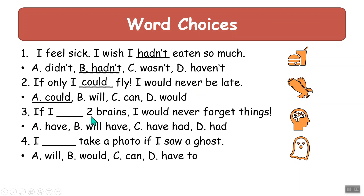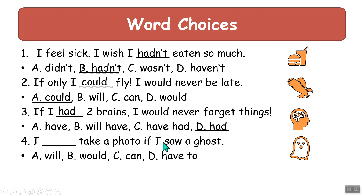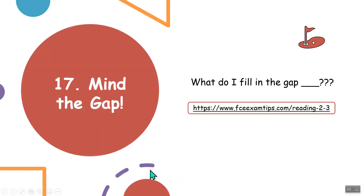'If I had two brains, I would never forget things.' Do you have two brains? No. So we want the past — it's like the second conditional. 'If I saw a ghost, I would take a photo.' This is the second conditional: if I saw a ghost, I would — not will, can, or have to — I would take. Remember, past in the if-clause, then 'would' in the result. We will do more multiple choice in the lesson.